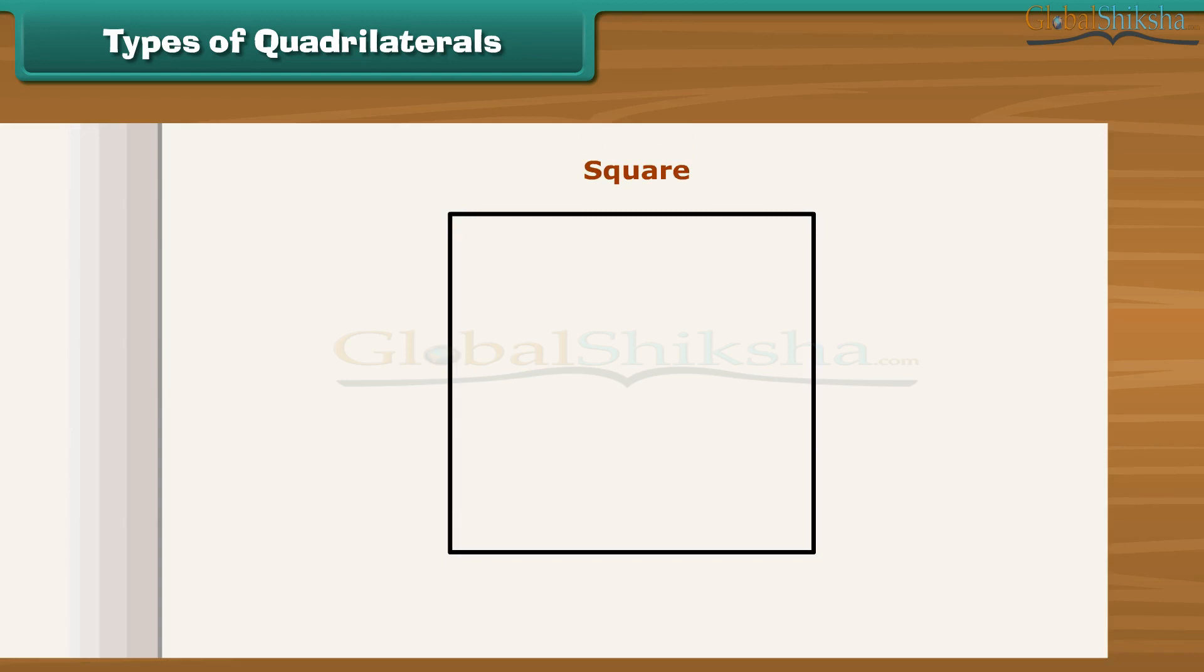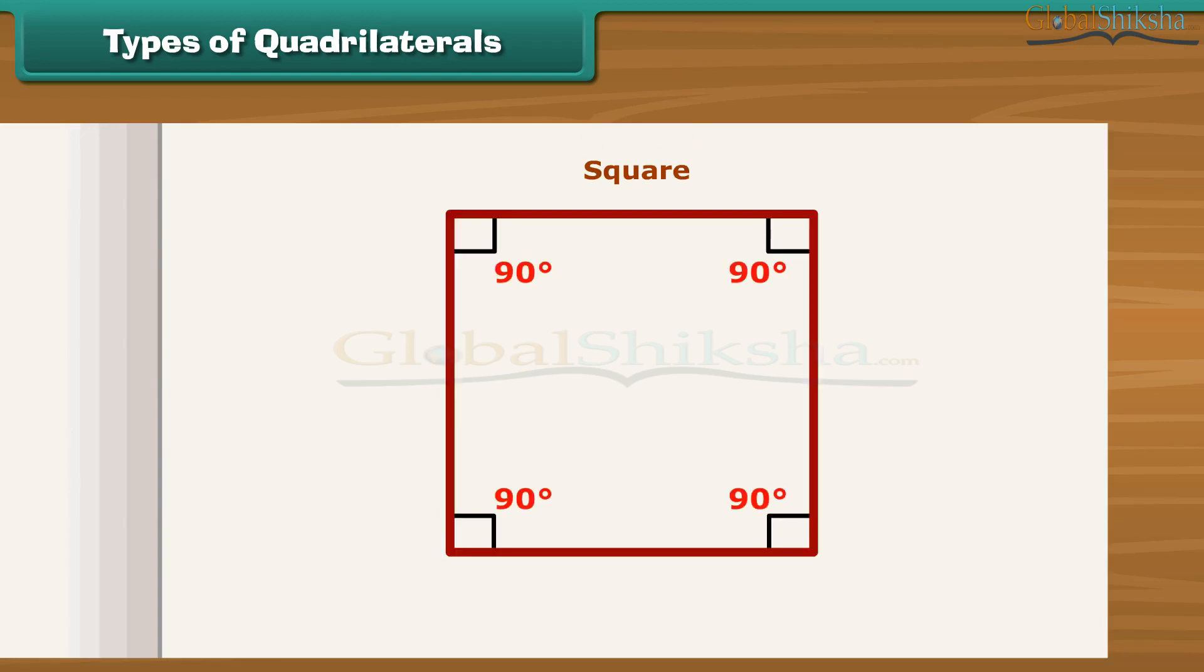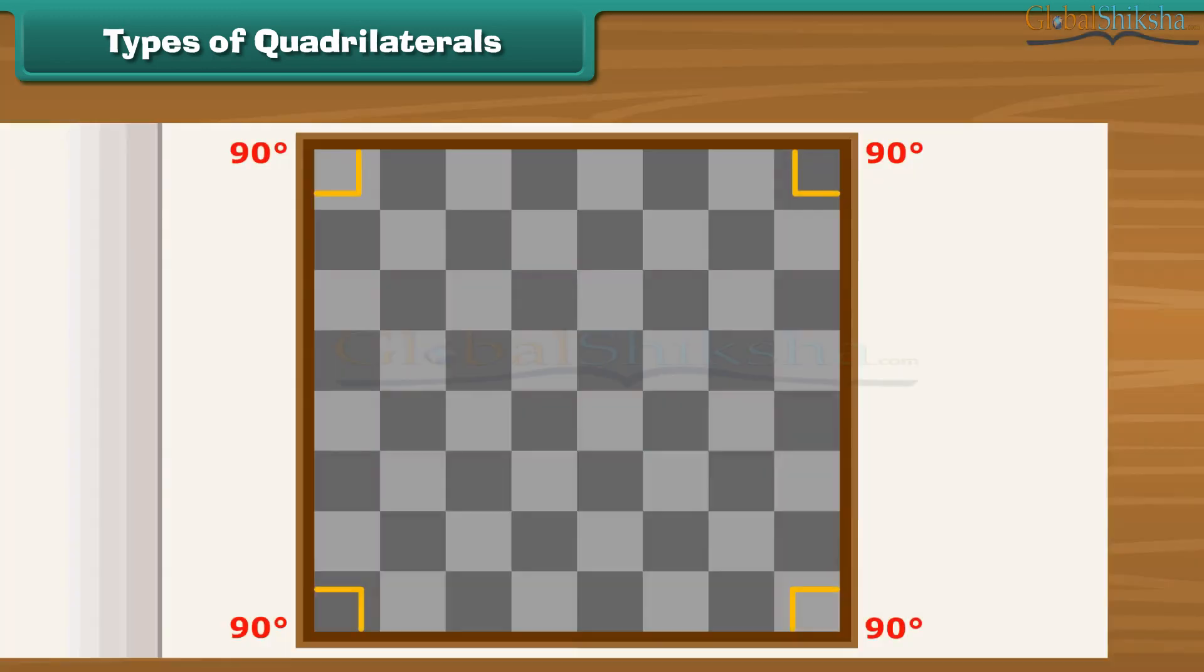A square is a parallelogram in which all angles are right angles and all sides have the same length. Hey friends, do you enjoy playing chess? Look at the chessboard. It is square in shape.